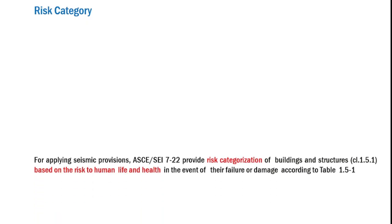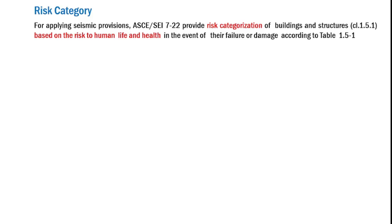What is the risk category and what is the objective of defining it? ASCE 7-22 defines a risk categorization associated with buildings and structures as per Clause 1.5.1. The sole basis for such categorization is the risk to human life and health in the event of their failure or damage, and this is done according to Table 1.5-1.